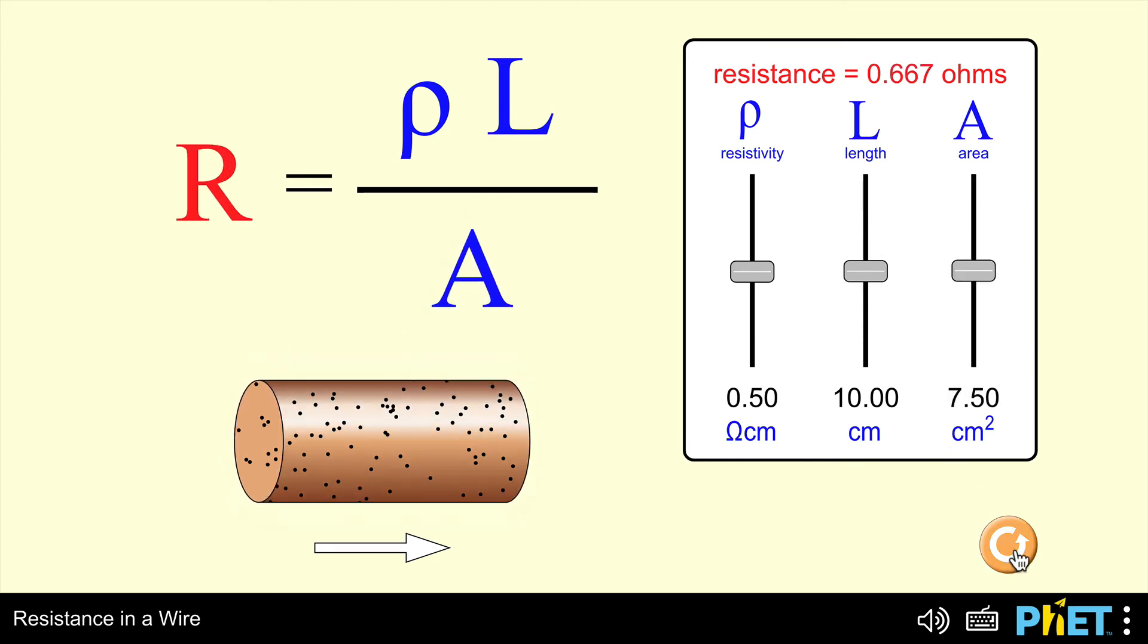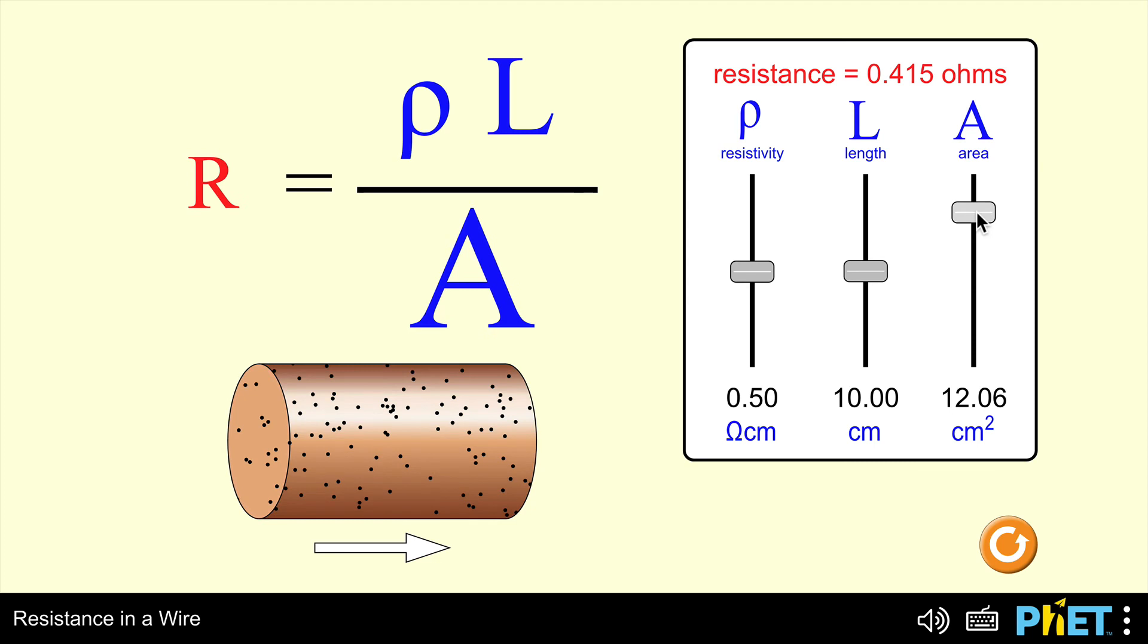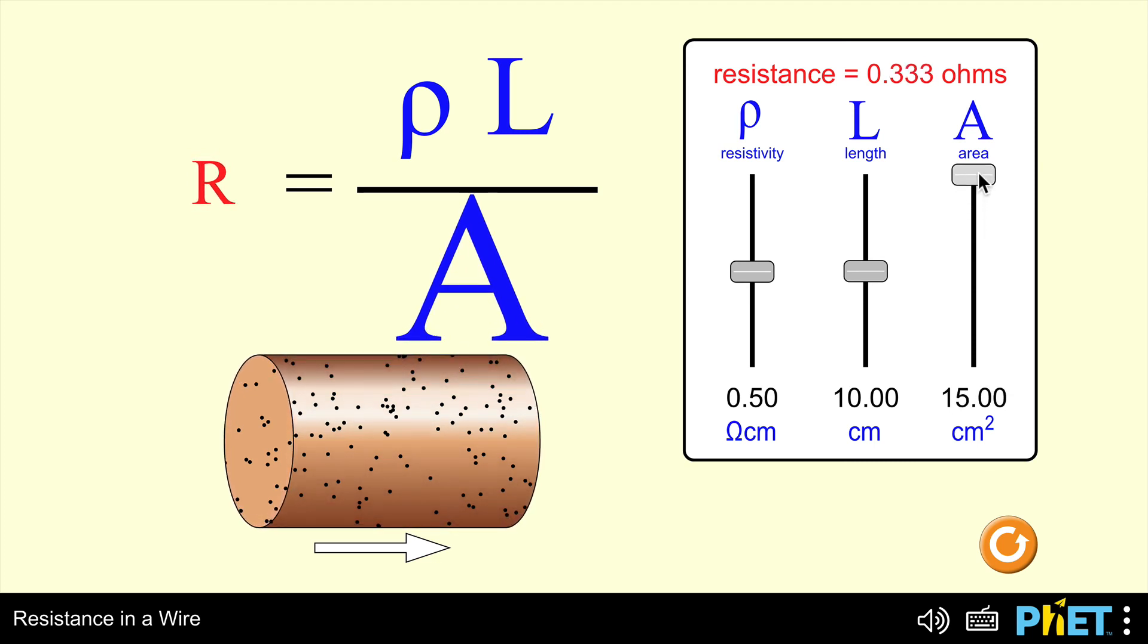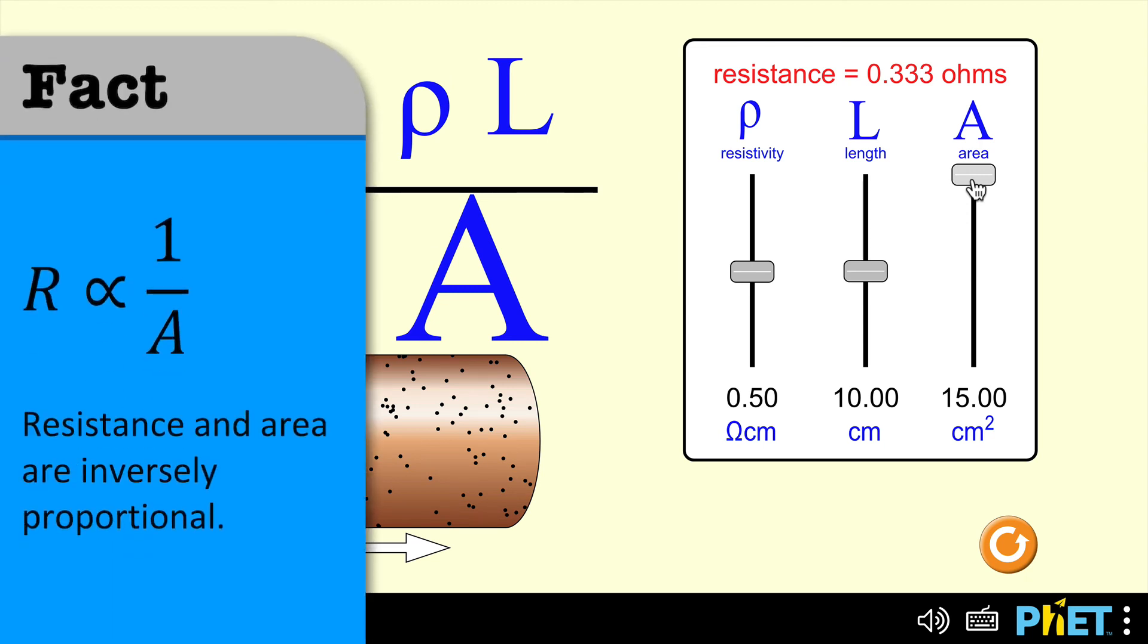To look into that in a bit more detail, I'm starting off with a cross-sectional area of 7.5 centimeters squared. I'm going to double that to 15. Look at the initial resistance, 0.667. When I double that area from 7.5 to 15, the resistance is halving. When one quantity is doubled and the other one halves, these two quantities are inversely proportional.